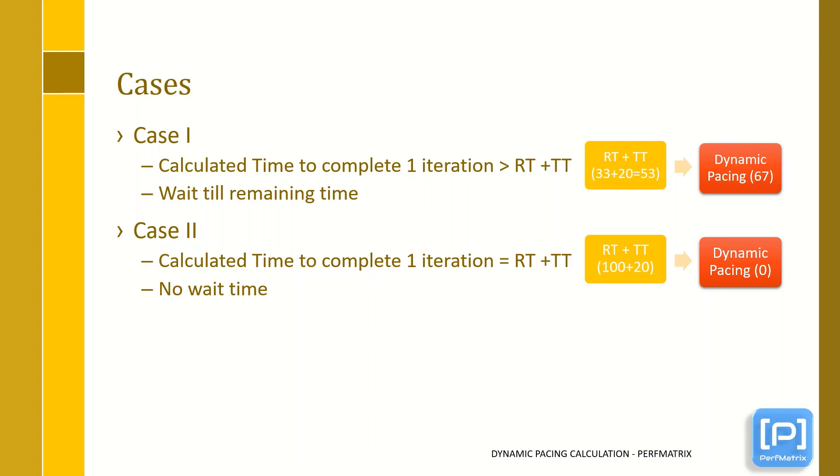Case 3. This is the worst case when the time to complete one iteration is less than the sum of response time and total think time. Again, tool will trigger the next iteration back-to-back without any delay which will impact expected TPS.